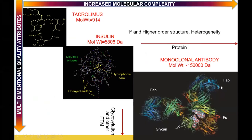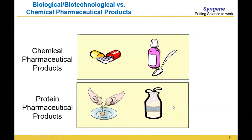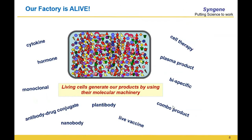Identifying CQAs for biologics becomes complicated. Most biological products take the parenteral dosage route — basically, you are injecting it and it is directly available to the bloodstream. Hence it becomes all the more important that we understand the quality attributes in such a way that attributes critical for stability and efficacy are tuned so that your protein does not become immunogenic and the process gives a consistent outcome.